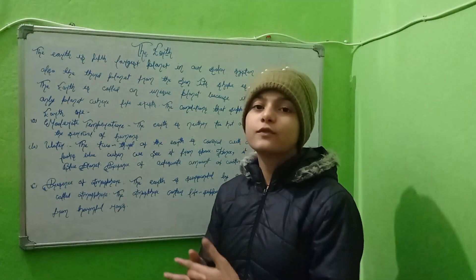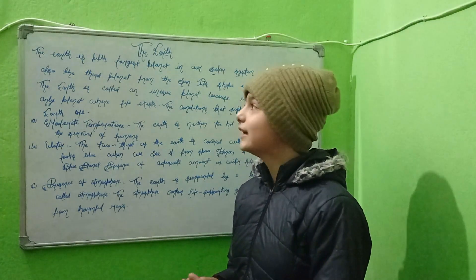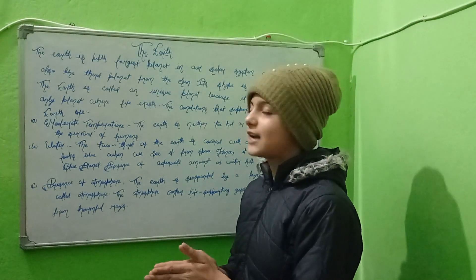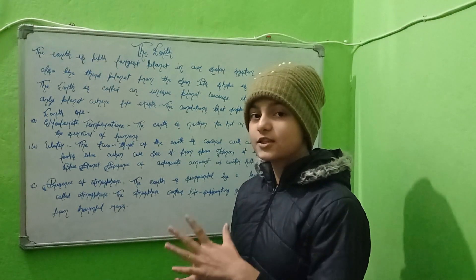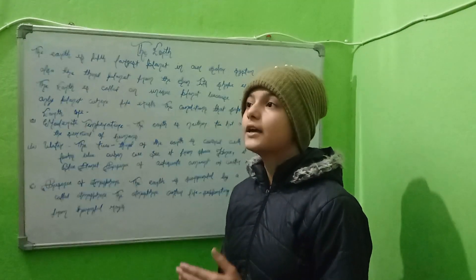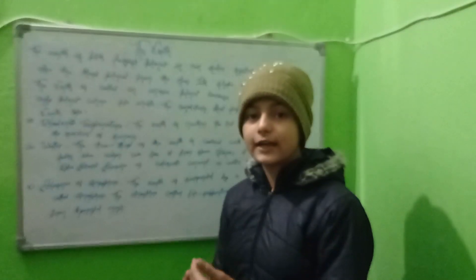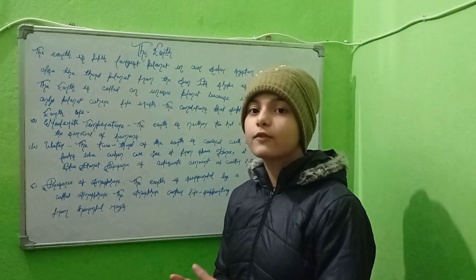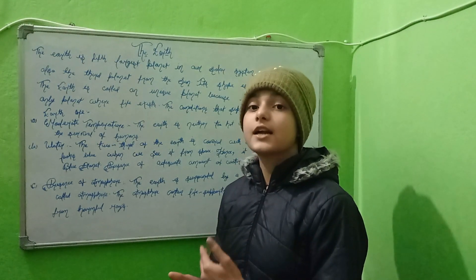So let's start. The Earth is the fifth largest planet in our solar system. In our solar system there are total eight planets, from which our Earth is the fifth largest planet.